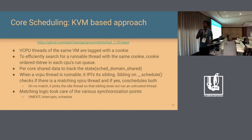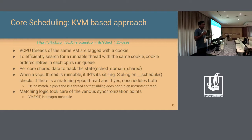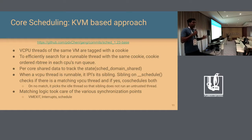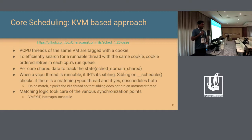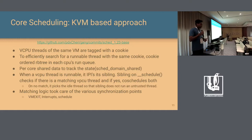In the KVM-based approach, vCPU threads of the same VM form the trusted group. Since you need core-wide knowledge about the group, a sched domain shared structure is used. When a vCPU thread becomes runnable, an IPI is sent to the sibling, which then tries to find a matching vCPU thread from the same VM. If no match is found, it schedules idle. The matching logic also handles other synchronization points: if a thread does a VM exit the sibling pauses, and similarly on interrupt or schedule events.